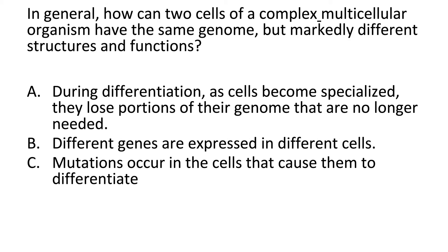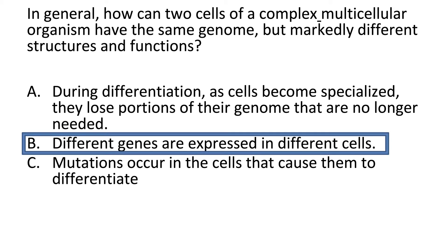How can two cells of a complex multicellular organism have the same genome but markedly different structures and functions? If you said B — different genes are expressed in different cells — you are correct. A neuron has the entire genome, the same genes as a muscle cell, but in that neuron different genes are expressed in different ways than in the muscle cell. You can have two different cells with the exact same genome but very different roles and appearances because the genome is expressed differently in each cell type.